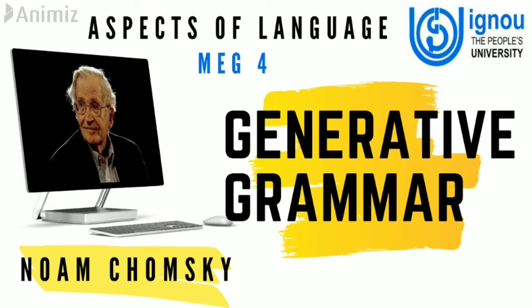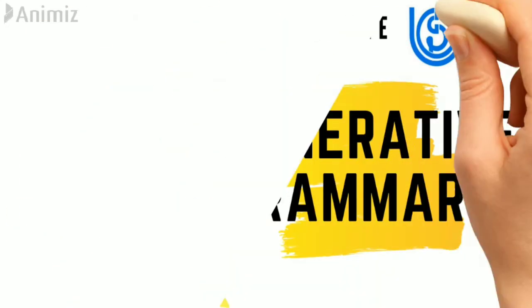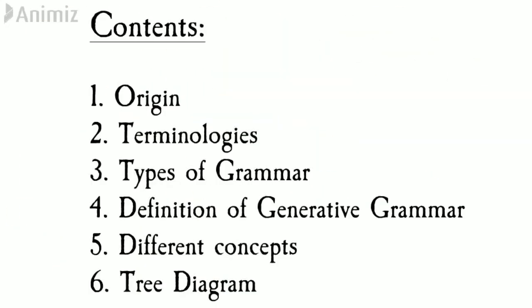For the convenience of the video, I have divided the entire session into particular segments. In the first part we'll discuss the origin of generative grammar. In the second part, important terminologies. Then different types of grammar, followed by the definition of generative grammar. After that, certain concepts regarding generative grammar. The final segment will introduce tree diagram — just scratching the surface, with a dedicated video to follow.